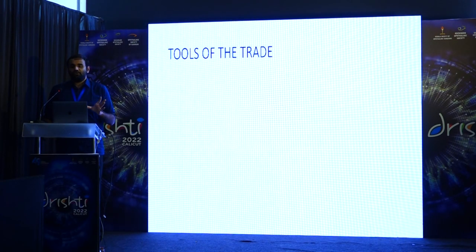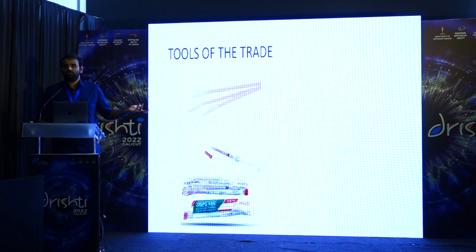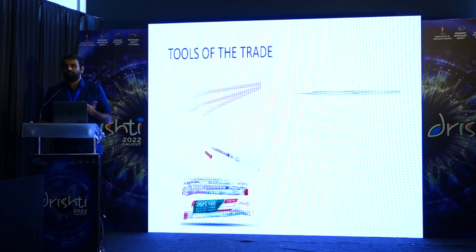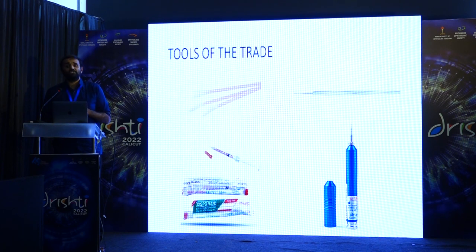Tools of the trade for foreign body removal: if superficial, a cotton bud to wipe it off. I use a 30-gauge insulin syringe with a bevel — very atraumatic, works extremely well. You can also use a foreign body spud available from most surgical suppliers. At the end, if there is rust ring remaining, use an alger brush — a diamond burr — to polish the rust ring off without causing too much tissue damage.